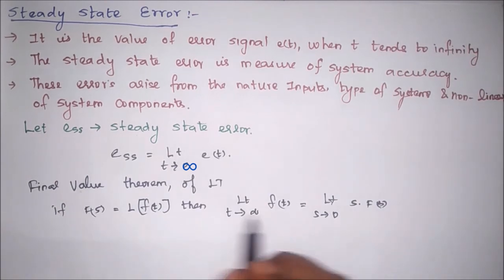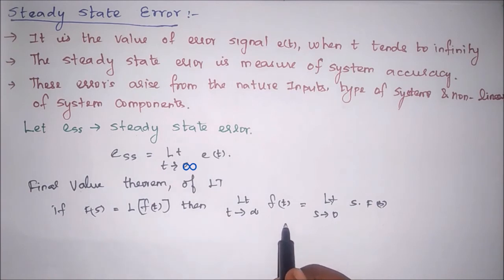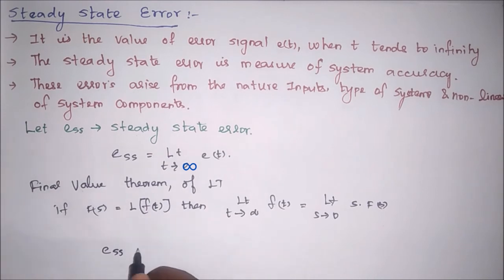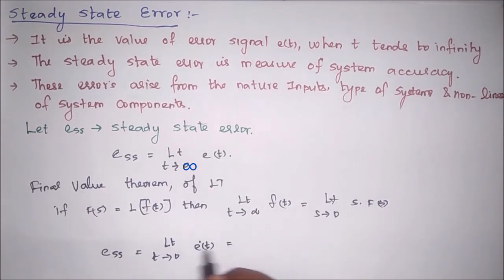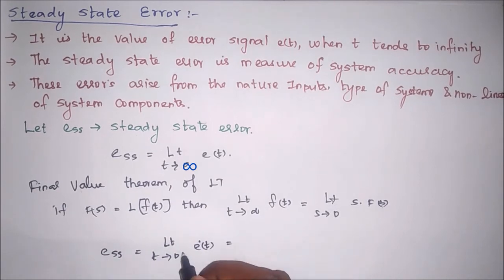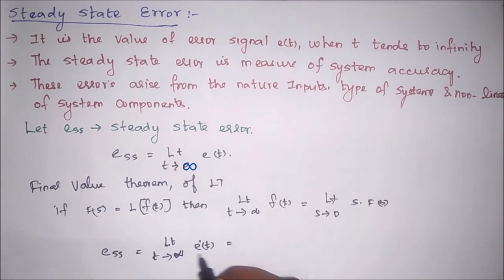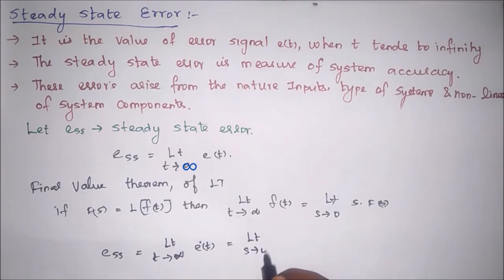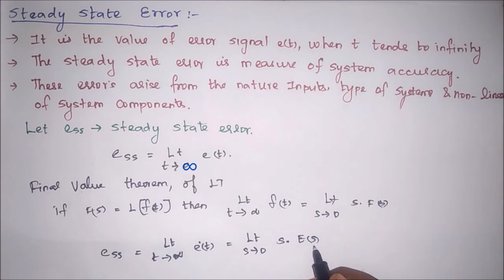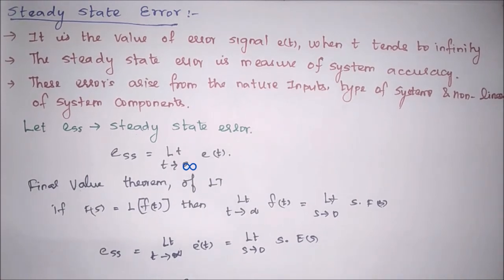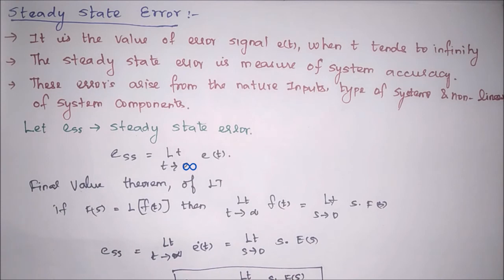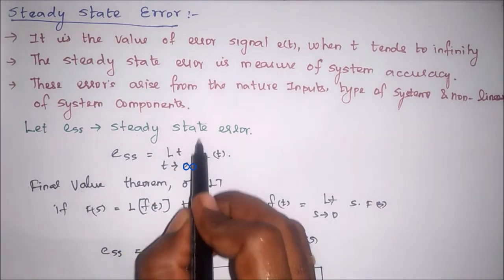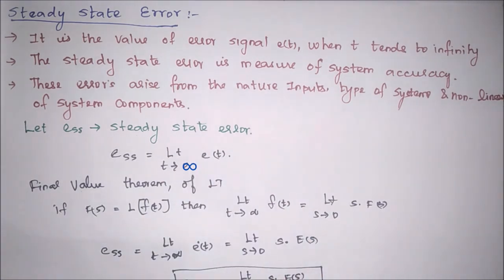Now we apply this final value theorem to get the steady state error. Steady state error Ess equals limit as t tends to infinity of e(t). According to the definition, this equals limit as s tends to zero of s into the error signal in terms of Laplace transform. Therefore we can say: steady state error in the s-domain equals limit as s tends to zero of s into E(s). This is the expression for steady state error calculation — by using the final value theorem based on the definition of steady state error, we get this expression in terms of Laplace transform.